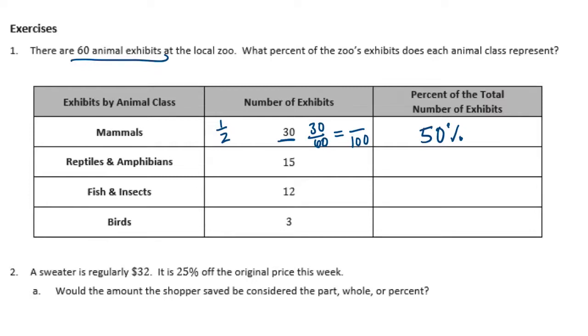Reptiles and amphibians, that would be 15 sixtieths. I can't also, 60, I can't evenly make that into 100% by multiplying. So I'm going to reduce again. And 15 sixtieths, I can divide both by 15. 15 divided by 15 is 1. 60 divided by 15 is 4. So 1 fourth. Now if I wanted to make that into 100, now I can. So 4 times 25 is 100, and 1 times 25 is 25. So we get 25 hundredths, which would be 25%.